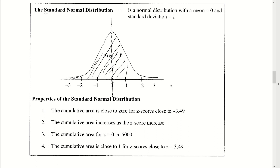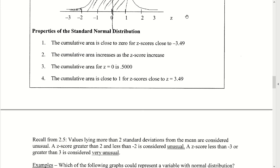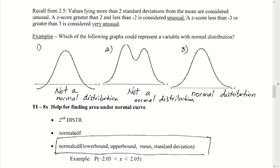The standard normal distribution is a special normal distribution with a mean equal to zero and a standard deviation equal to one. Looking at three example graphs, the first would not represent a normal distribution because it crosses the horizontal axis. The second is not bell-shaped at all. The third satisfies all requirements — it is symmetric, bell-shaped, and asymptotically approaches the x-axis on both sides.